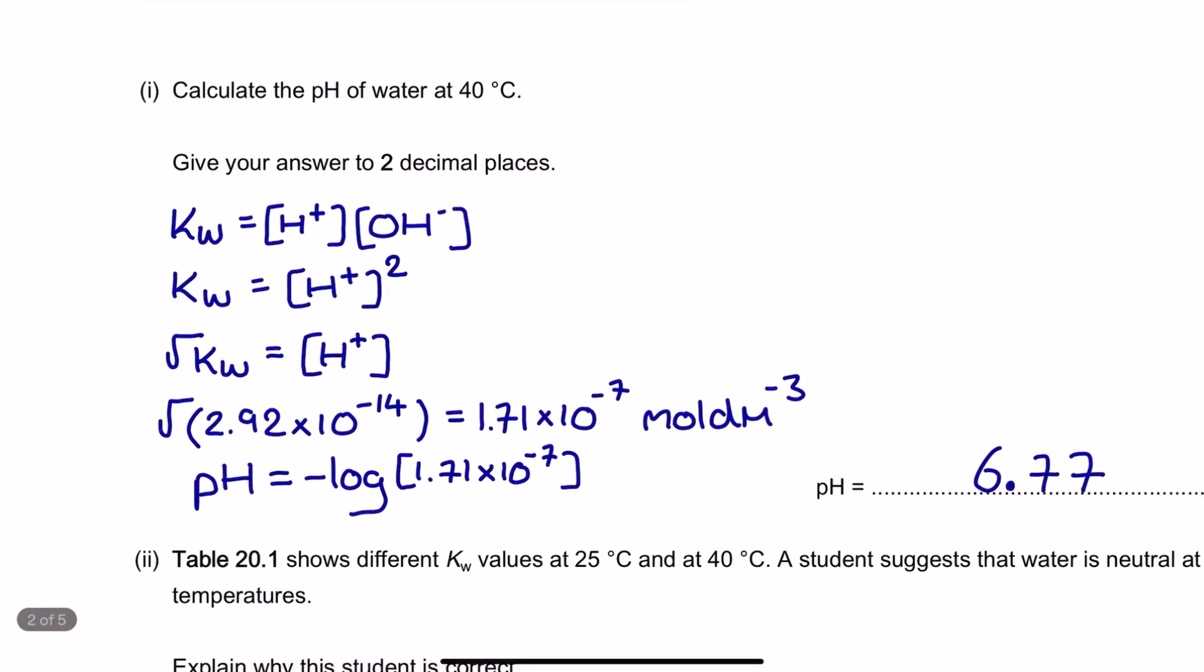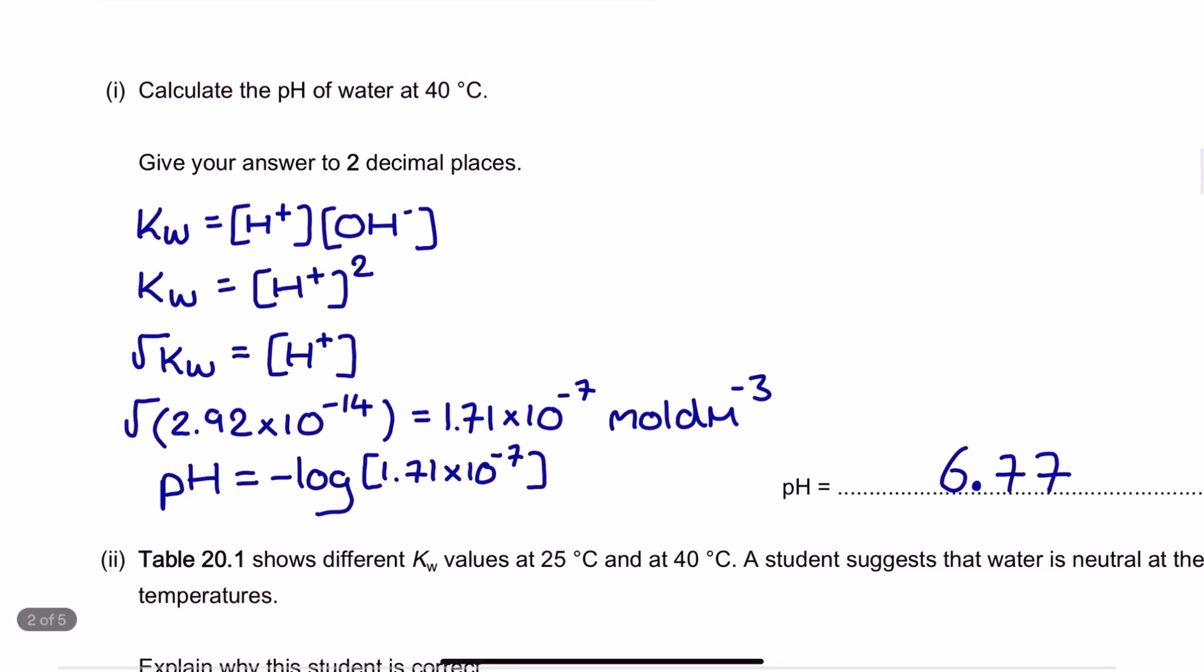First off, we're being asked to calculate the pH of water at 40 degrees C. We're assuming pure water here, and what that means is we've got that information that the H plus ion concentration is equal to the OH minus ion concentration. So I can use my rearrangement here to give me square root of KW equals the H plus ion concentration. And you can see here, because I'm being asked to calculate the pH of the water at 40 degrees C, I'm using from the table the value of KW at 40 degrees C. That then gives me an H plus ion concentration of 1.71 times 10 to the power of negative 7, and that gives me a pH when I negative log to the base 10 of 6.77. I do need to give my answer to two decimal places here to get that second mark for this calculation.